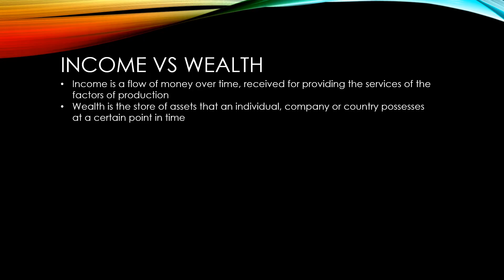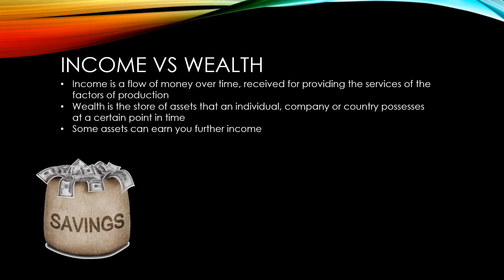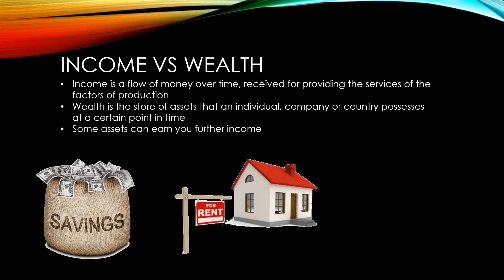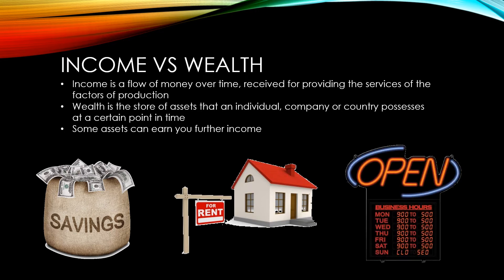Wealth includes all of the material possessions a person has, such as houses, cars, furniture, and electronics. Some of these assets can earn you further income — for example, savings can earn interest income, a second home can earn rent income, or owning a business or shares in a business can provide income from a part of that business's profits.